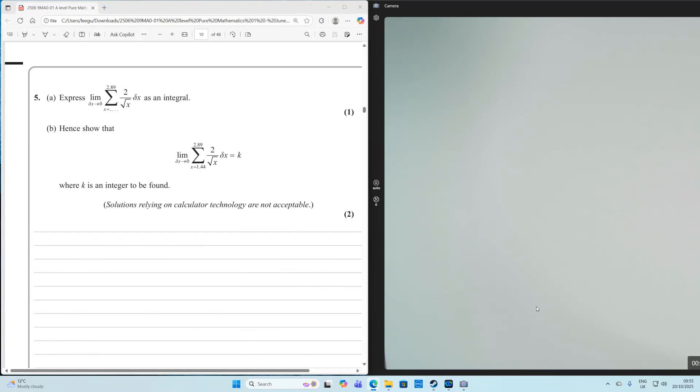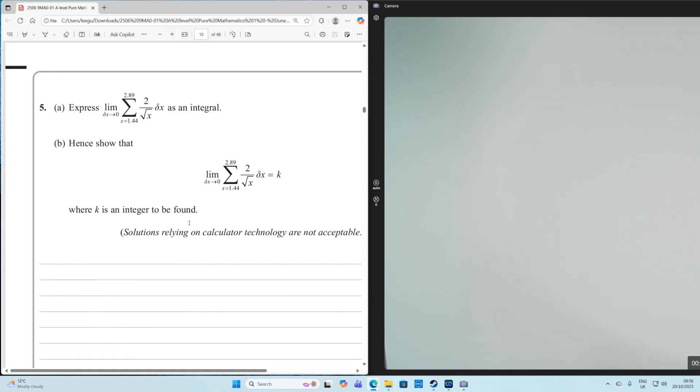It says express the limit as delta x tends to zero of sigma x is equal to 1.44 to 2.89 of 2 over root x delta x as an integral.